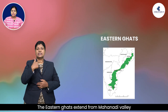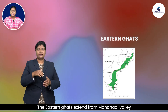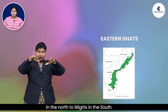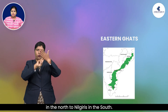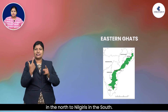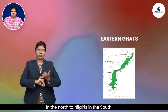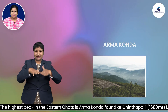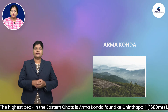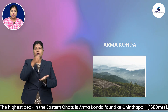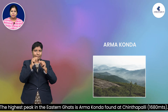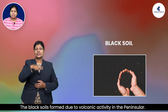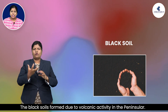The Eastern Ghats extend from the Mahanadi valley in the north to the Nilgiris in the south. The highest peak in the Eastern Ghats is Arma Konda, found at Chintapalli, at 1,680 meters. The black soils were formed due to volcanic activity in the peninsula.